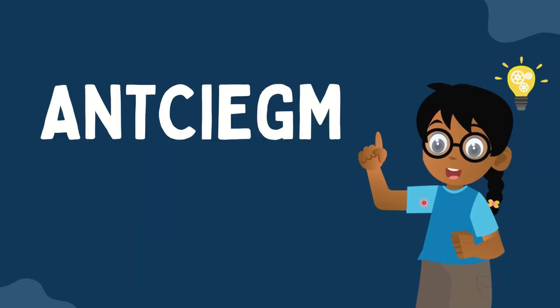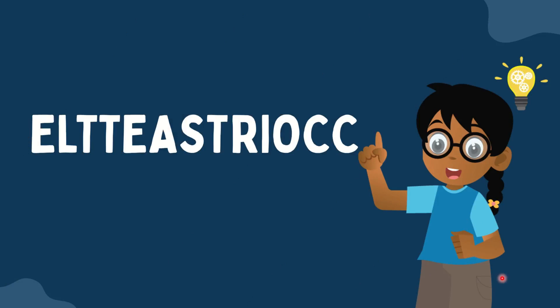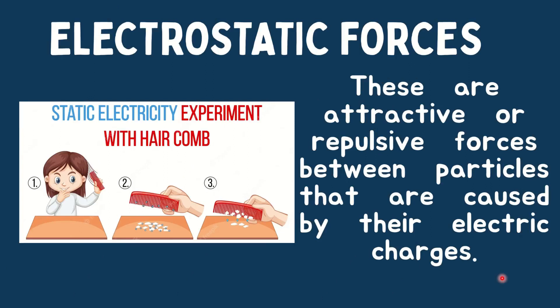Next word — it starts with letter M. It is magnetic. Magnetic force can be defined as the attractive or repulsive force that is exerted between the poles of a magnet and electrically charged moving particles. Let's have the next word — it starts with letter E. That is electrostatic. Electrostatic forces are attractive or repulsive forces between particles that are caused by their electric charges, just like the static electricity in our hair, comb, and pieces of paper. Have you tried this experiment? If you haven't, try it at home.